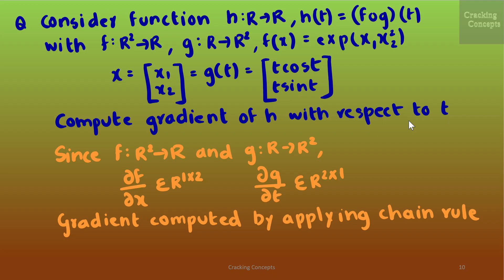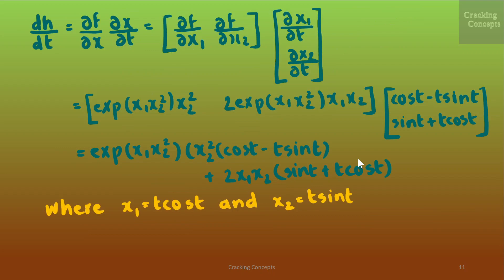Since f maps from ℝ² to ℝ and g maps from ℝ to ℝ², we note that df/dx belongs to ℝ¹ˣ² and dg/dt belongs to ℝ²ˣ¹. The desired gradient is computed by applying the chain rule: dh/dt = (df/dx)(dx/dt). Expanding, we get [∂f/∂x1, ∂f/∂x2] · [dx1/dt, dx2/dt]ᵀ. Substituting values and expanding the terms, where x1 = t cos t and x2 = t sin t, we arrive at the final result.